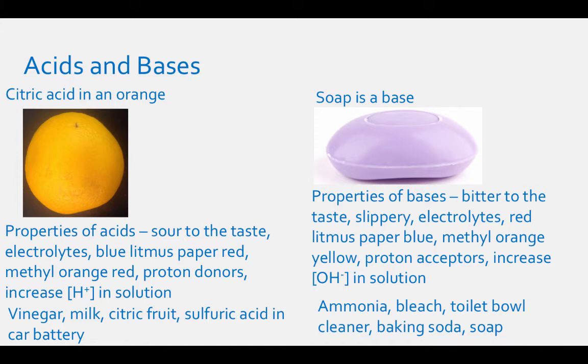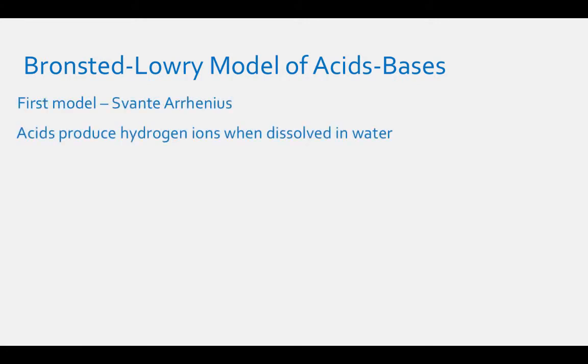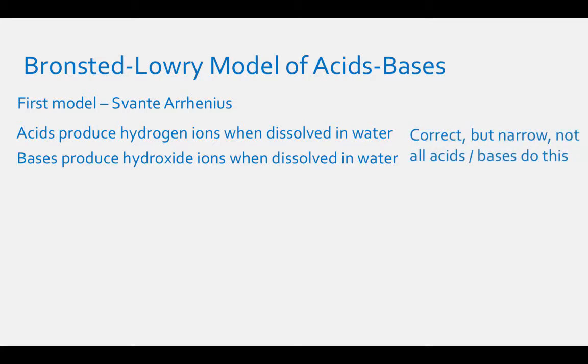The first model for acids and bases was proposed by Svante Arrhenius. He said that acids produce hydrogen ions when dissolved in water, and bases produce hydroxide ions when dissolved in water. Although this definition is correct, it is rather narrow, as not all acids and bases do this.